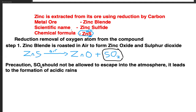The precaution is that sulfur dioxide should not be allowed to escape into the atmosphere because it leads to the formation of acid rain, which can destroy vegetation. Therefore this reaction should happen under controlled conditions — not in an open space — so that the sulfur dioxide produced is contained.